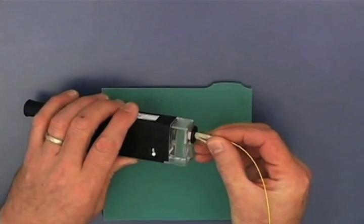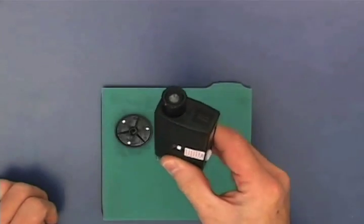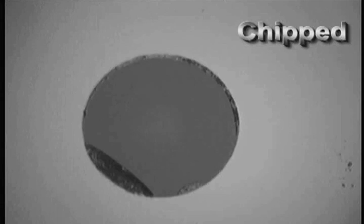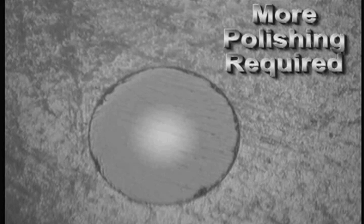Check the connector tip using a microscope. Here is an example of a good connector. This is an example of a chipped connector. If any adhesive remains, polish the connector tip with a few more figure eights.